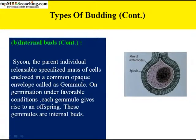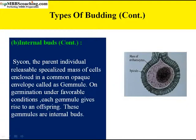In Sycon, the parent individual releases a specialized mass of cells enclosed in a common opaque envelope called a gemmule. On germination under favorable conditions, each gemmule gives rise to an offspring. These gemmules are internal buds.